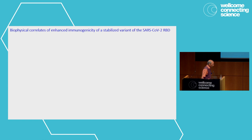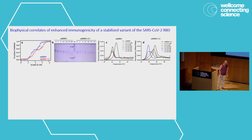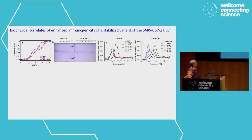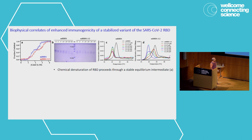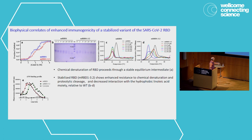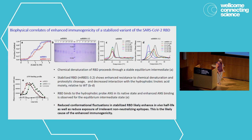Why does this happen? We don't know all the answers, but certainly the stabilized proteins are more resistant to trypsin digestion — on the gel, the right panel is the stabilized protein and the left panel is the wild type. They also show greater tolerance to guanidine hydrochloride, and they tend to bind less of the hydrophobic dye ANS. Essentially, we think that by introducing these stabilizing mutations identified through deep mutational scanning, we are likely enhancing the in vivo half-life and reducing conformational fluctuations in the protein, which lead to elicitation of unwanted antibodies.